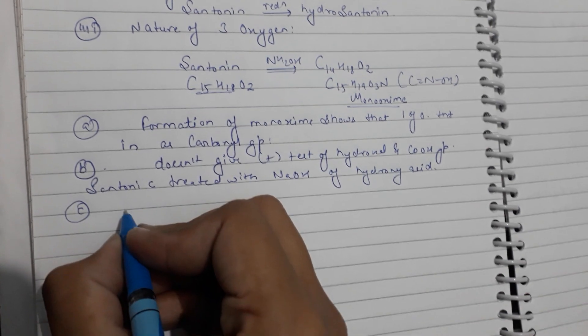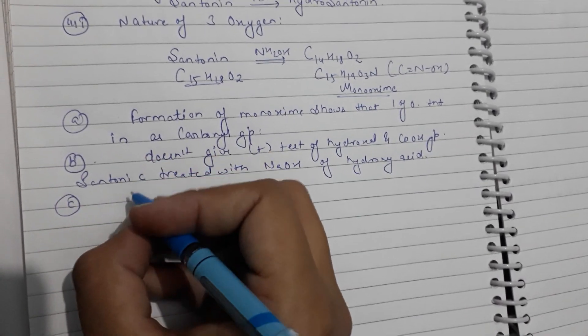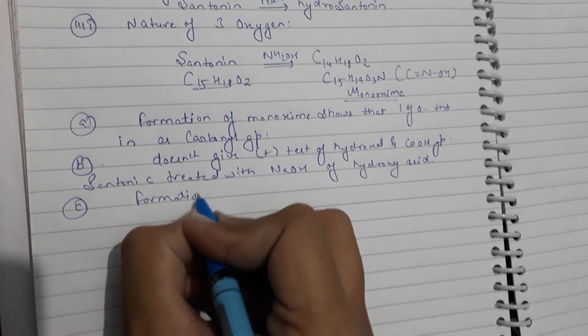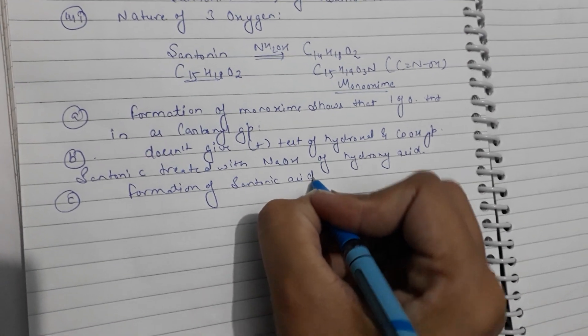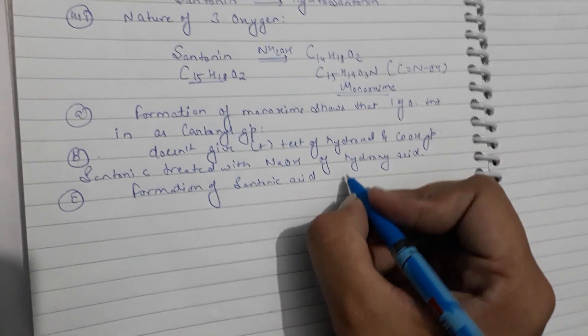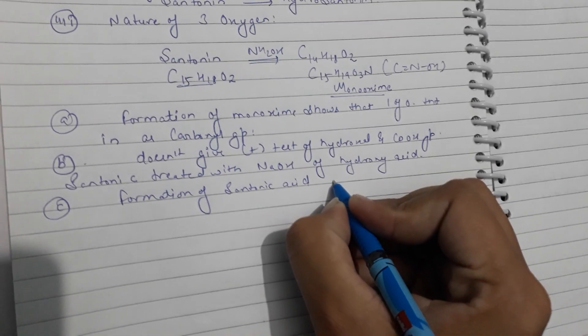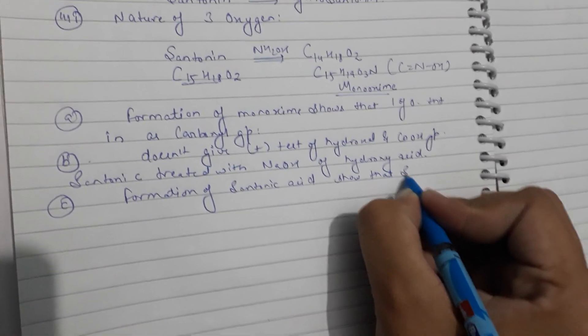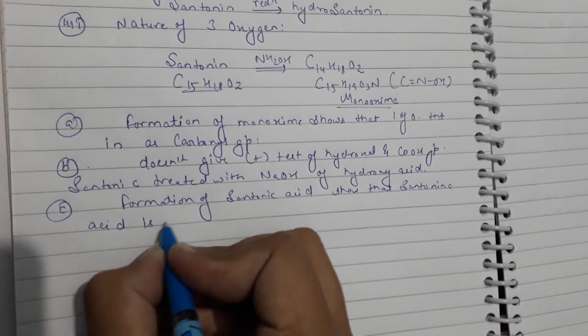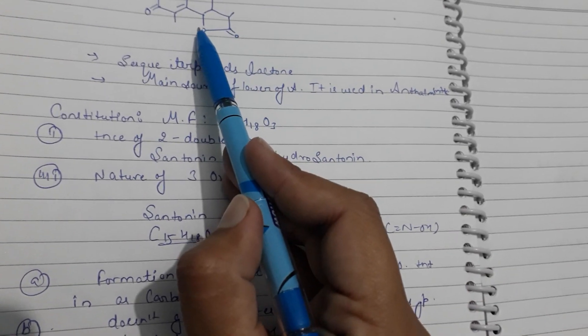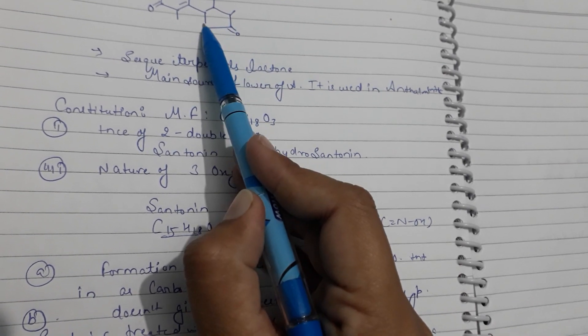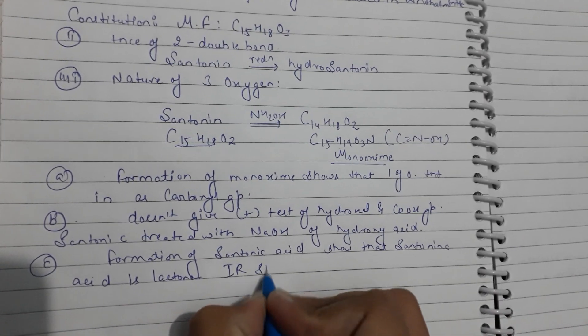The third point is the formation of Centonic acid. Formation of Centonic acid shows that Centonin is a lactone, meaning there is the presence of a lactone group — oxygen bonded to a carbon. This is confirmed by IR spectrum.